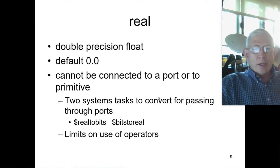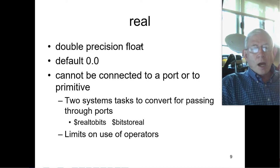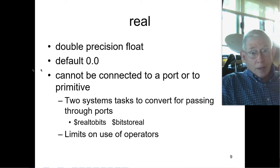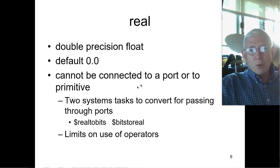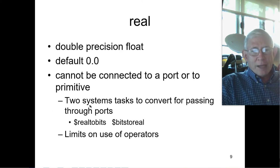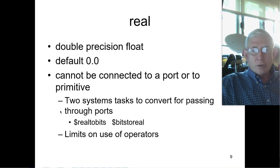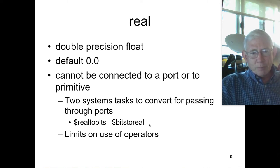Reals are just what you think — they are double precision floating point numbers in IEEE standard. They default to 0.0. They cannot be connected to a port or to a primitive, so you can't pass them to and from a port. There are some system tasks provided to allow you to pass them into a module and get them back, allowing you to go from real to bits and bits to real. You have to convert them with these system tasks, and there are limits on what operators you can use with these.